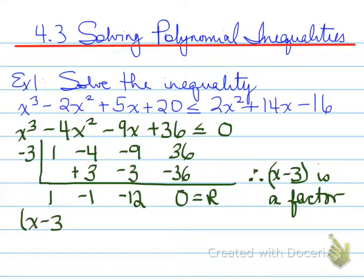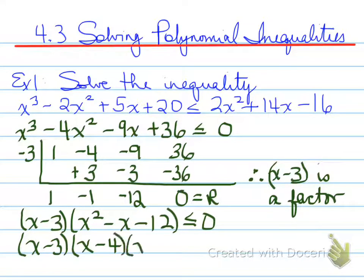What we're left with is a quadratic. Because factoring is really a faster step than doing synthetic division again, we're going to factor that remaining quadratic, and we get x minus 4 times x plus 3 is less than or equal to 0.